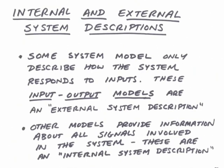I want to introduce the idea of internal and external system descriptions. This is important to the discussion of stability and instability. There are different kinds of models that we can make of systems — some are external descriptions, and some are internal descriptions. An external description describes how an input affects an output. An internal description describes not only this, but also what's going on inside the system about all the variables that are involved. If you have an internal system description, you can see all the signals within the system — nothing is being hidden. From an internal system description, you can get an external system description, but the reverse is not true. If you have an external system description, you may not be able to get an internal system description from it — there could be signals that are hidden and behaviors you are unaware of.